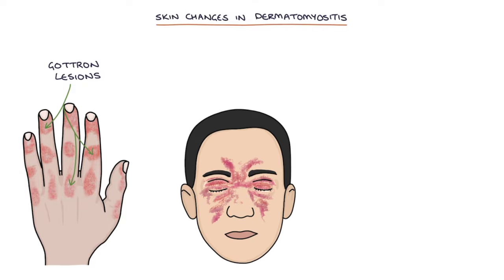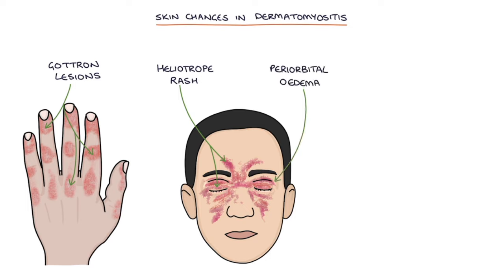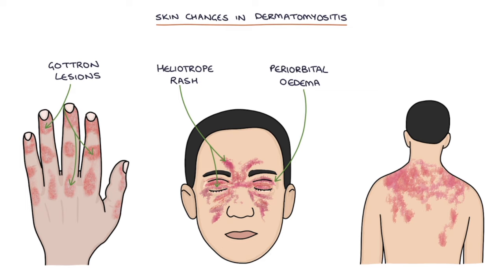The heliotrope rash is a purple rash on the face and eyelids. Periorbital edema refers to swelling around the eyes. There may also be a photosensitive erythematous rash — a red rash over the back, shoulders and neck.